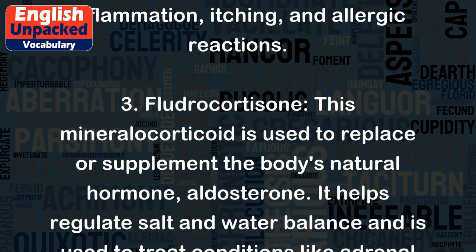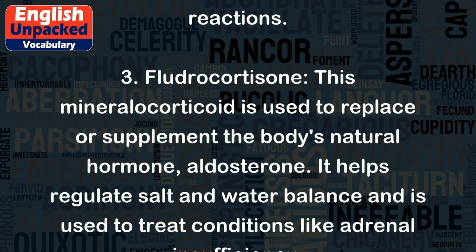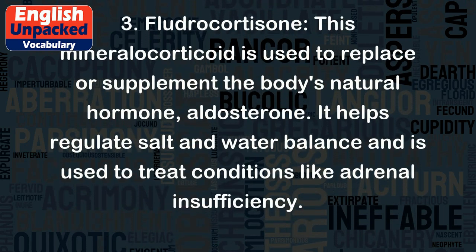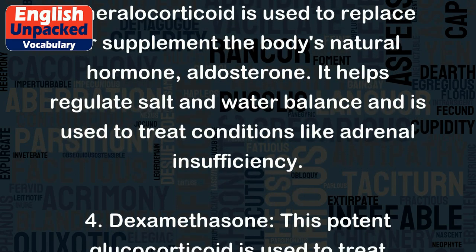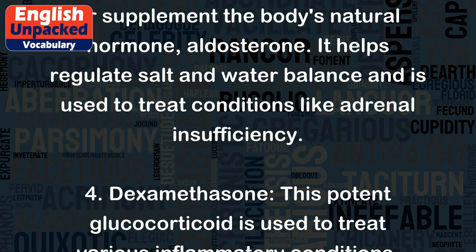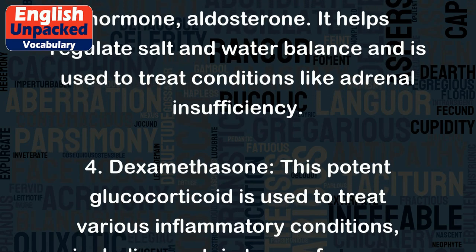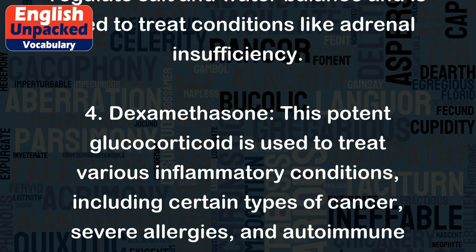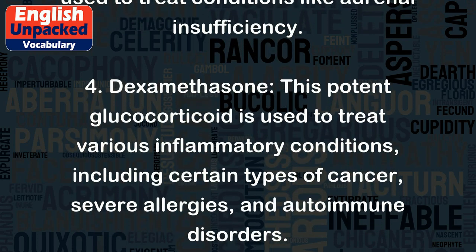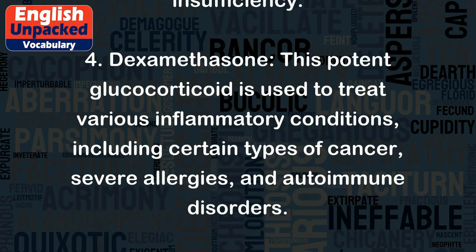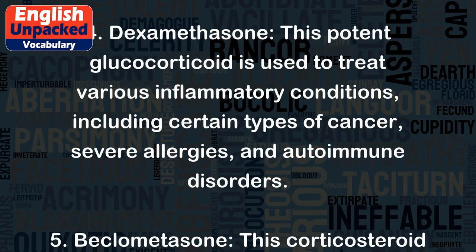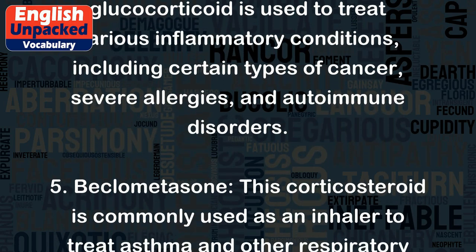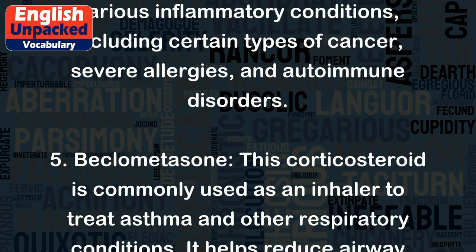3. Fludrocortisone: This mineralocorticoid is used to replace or supplement the body's natural hormone, aldosterone. It helps regulate salt and water balance and is used to treat conditions like adrenal insufficiency. 4. Dexamethasone: This potent glucocorticoid is used to treat various inflammatory conditions, including certain types of cancer, severe allergies, and autoimmune disorders.